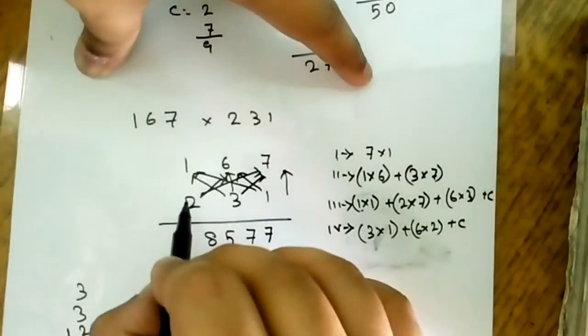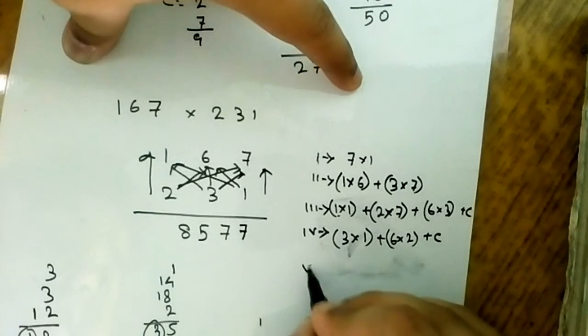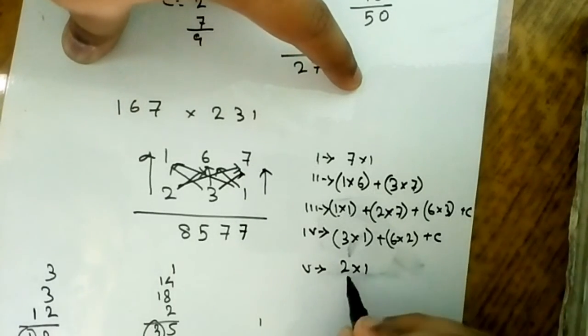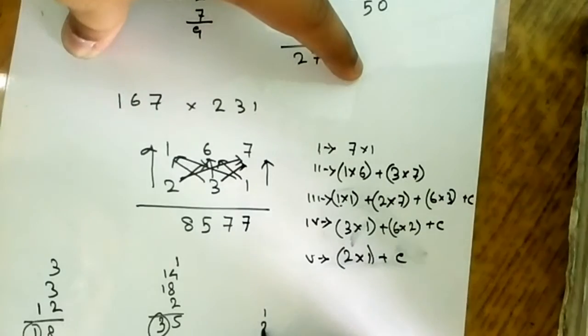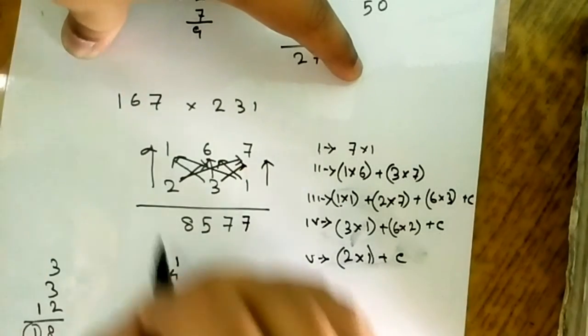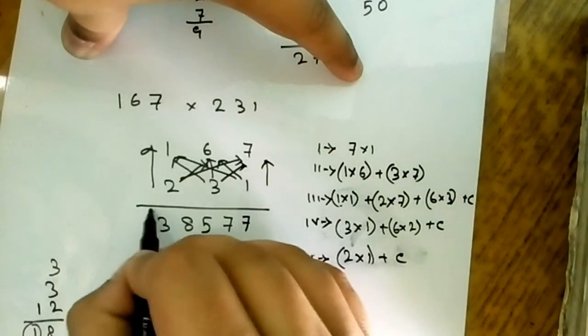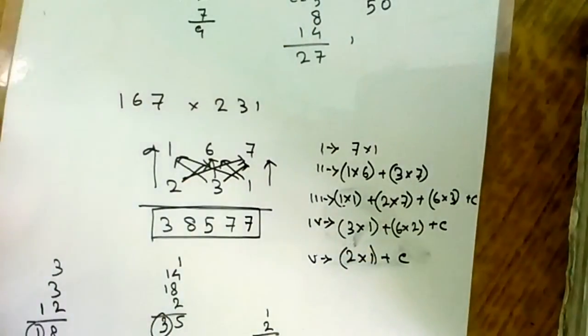In the fifth, the only numbers remaining are 2 into 1. Down to up: 2 into 1 is 2 plus carry 1 equals 3. That means 38577. This is the required answer.